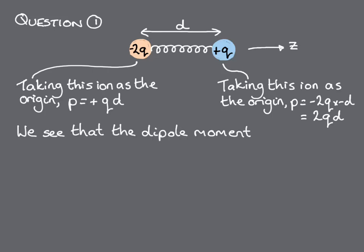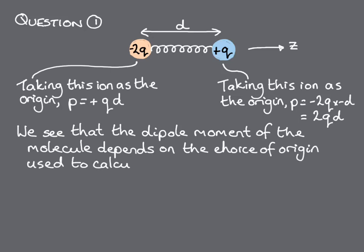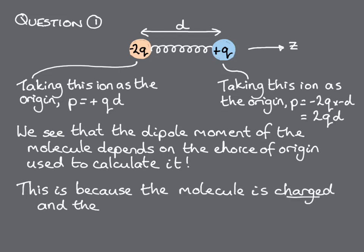So we see that in this case, the dipole moment of the molecule depends on the choice of the origin we use when we calculate it. The reason for this is that the molecule is charged, and the dipole moment of a charged molecule is not well defined.